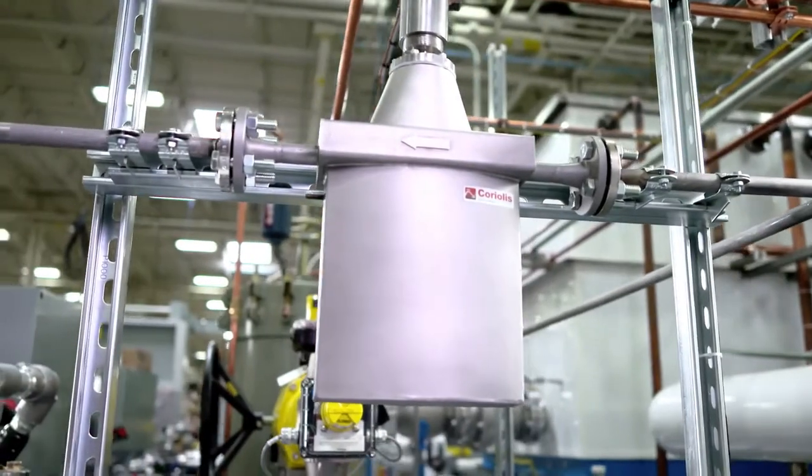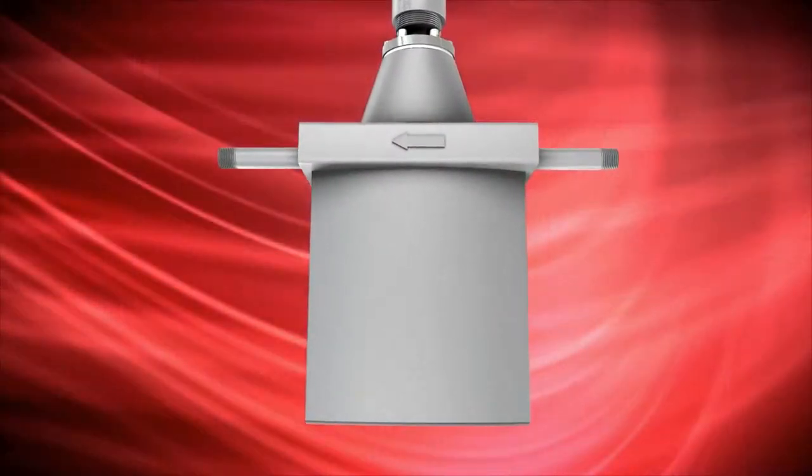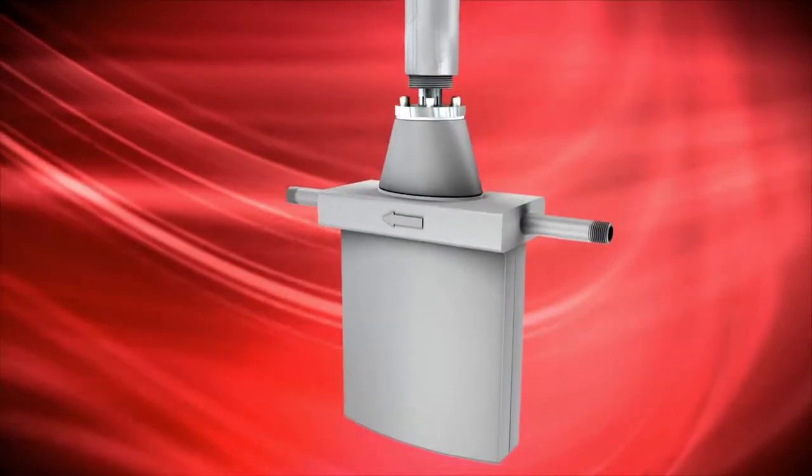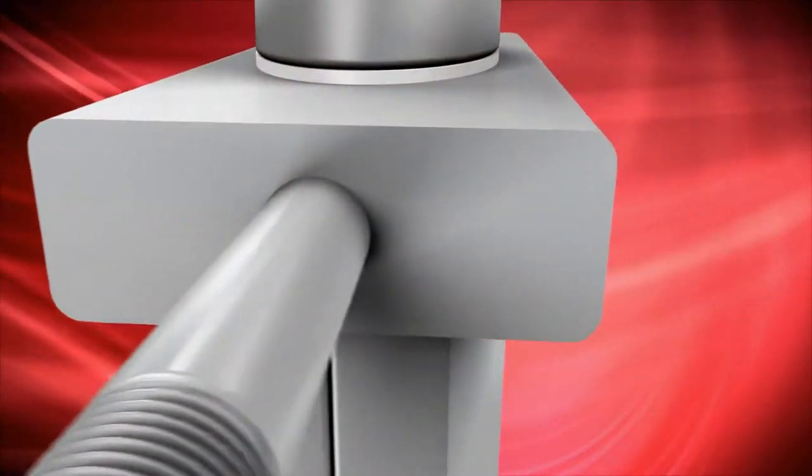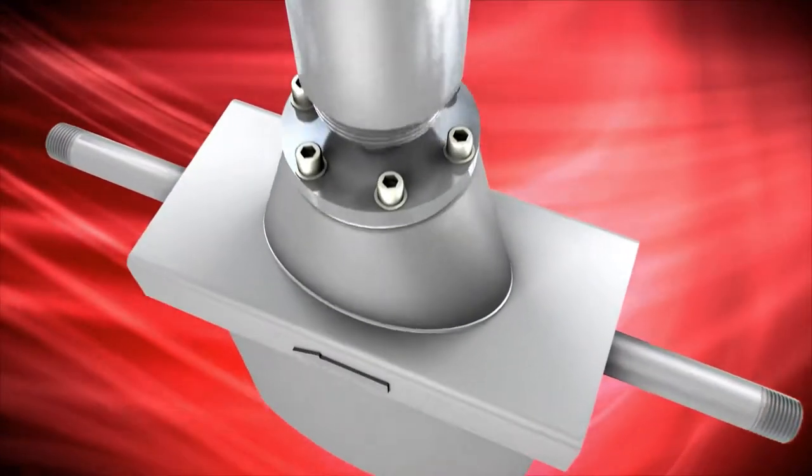The proven technology and accuracy of our Coriolis mass flow meters allows manufacturers to measure fluids of varying densities, viscosities, and compositions. Coriolis technology is unique in that it is unaffected by velocity profile distortion or swirl. No other flow metering technology offers such strength and versatility.